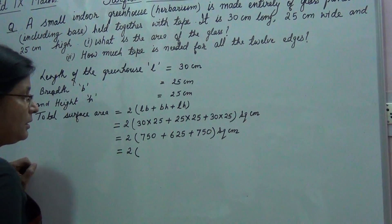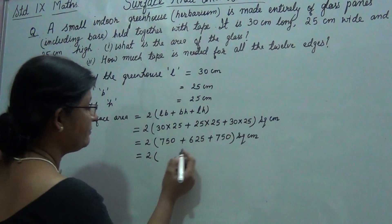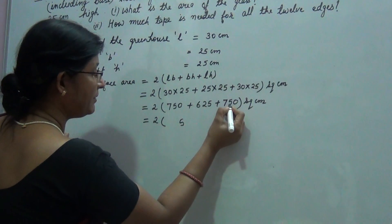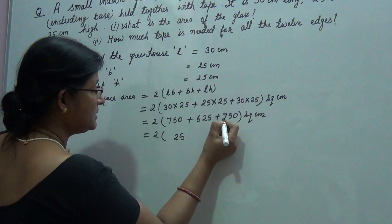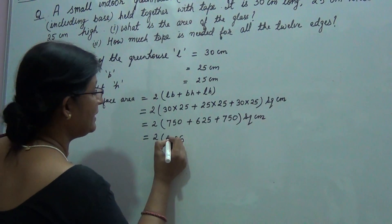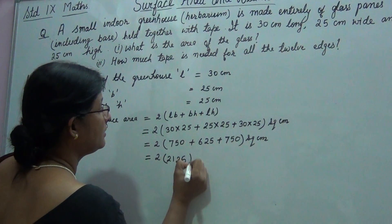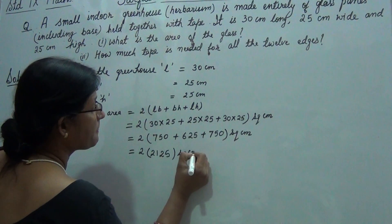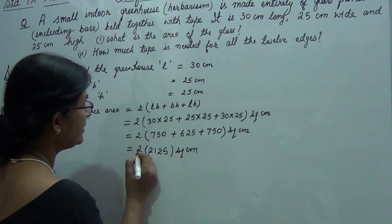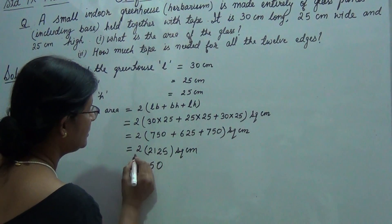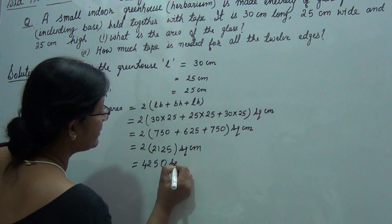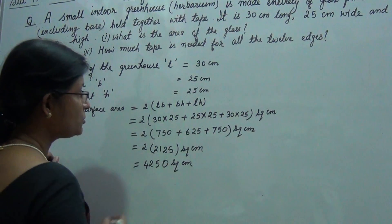This gives us 2 into (750 plus 625 plus 750) square centimeter. This is equal to 2 into 2126 square centimeter, and this is equal to 4250 square centimeter.